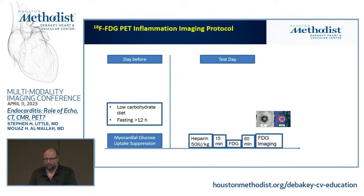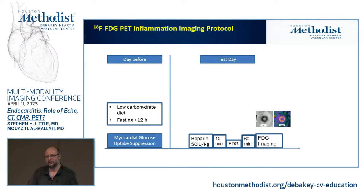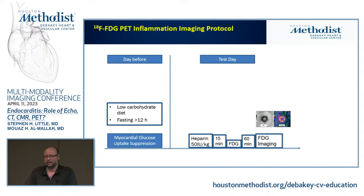For aortic valve or mitral valve assessment, we prepare patients with a low-fat, low-carbohydrate diet the day before, followed by prolonged fasting. After injecting FDG, we try to give heparin if there is no contraindication. This cardiac preparation is important because we don't want myocardial uptake obscuring the valve. You can see that with good preparation the myocardium does not pick up FDG, while poor preparation results in a lot of myocardial uptake making it very difficult to assess.